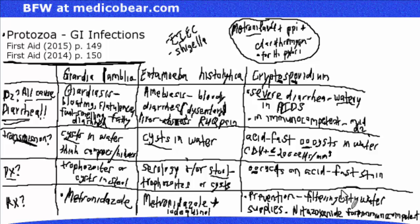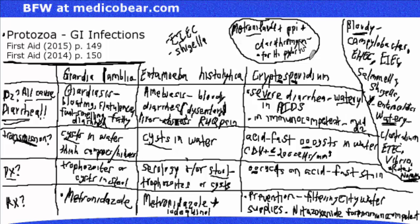This discussion covers only protozoans causing GI infections leading to diarrhea — please don't forget there are many other organisms that can cause diarrhea. The focus here was on Cryptosporidium, Entamoeba histolytica, and Giardia: knowing they cause diarrhea, and differentiating them by symptoms, transmission, diagnosis, and treatment. These are glaringly high-yield points students need to be aware of at a bare minimum.